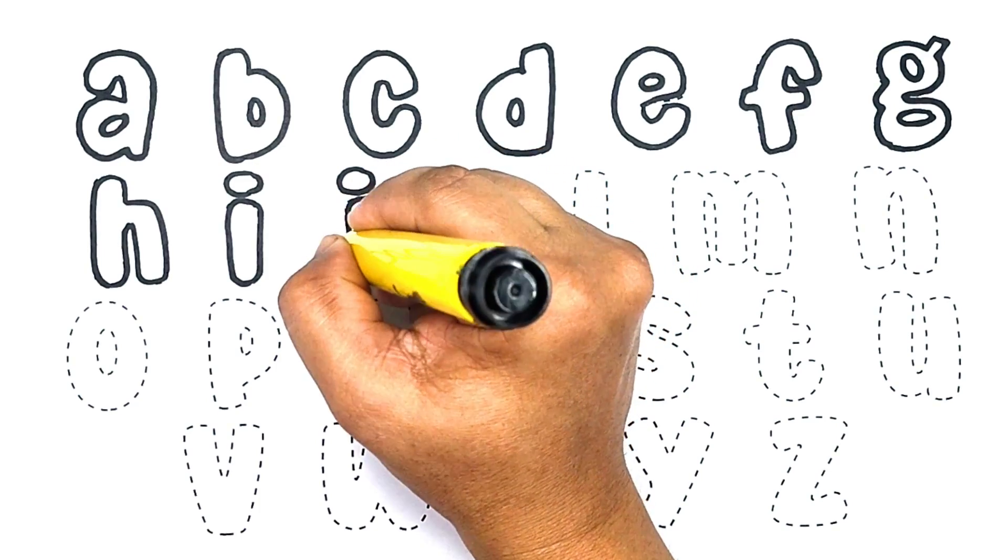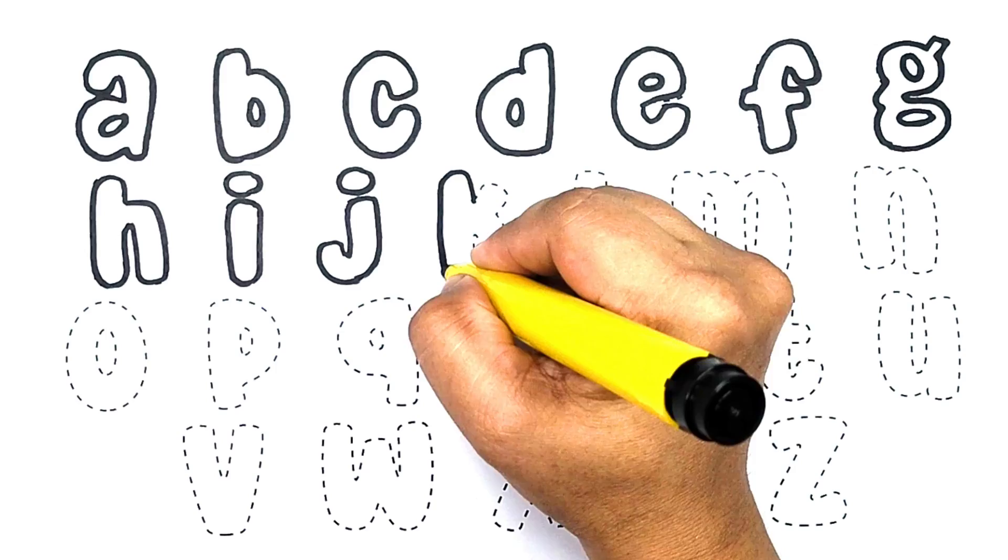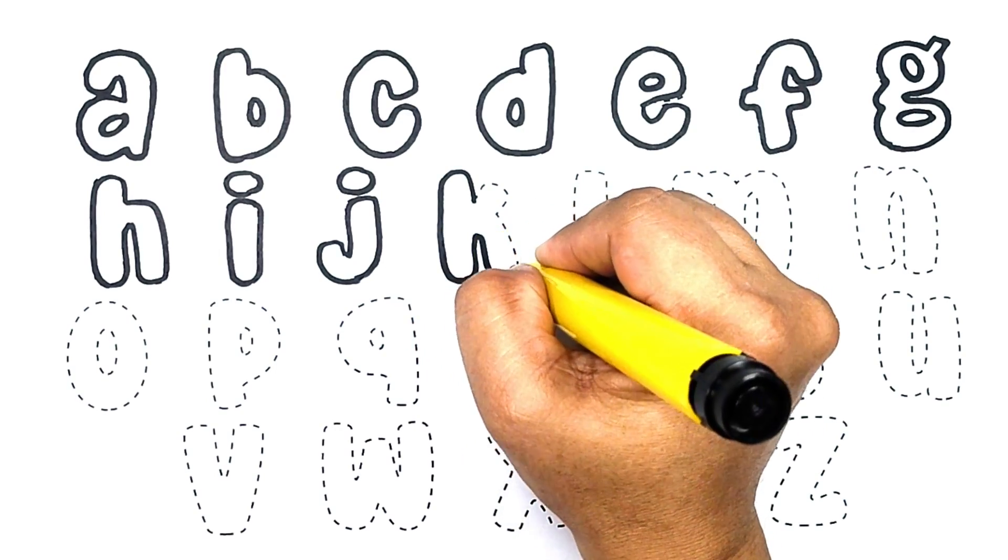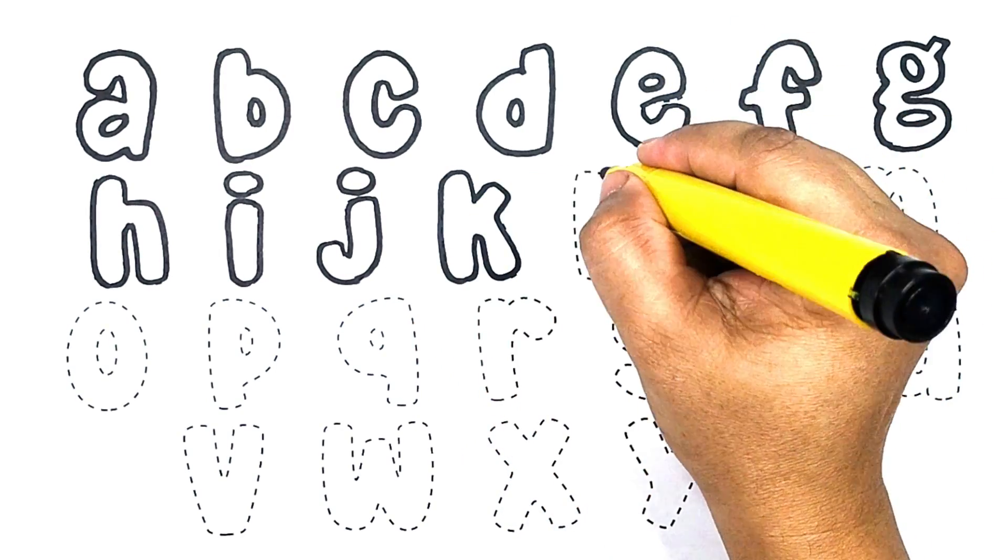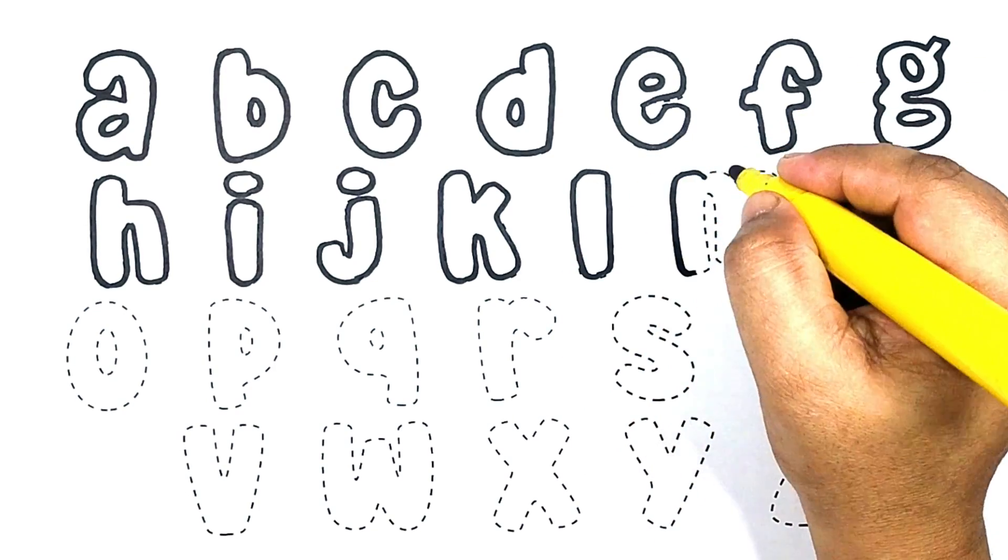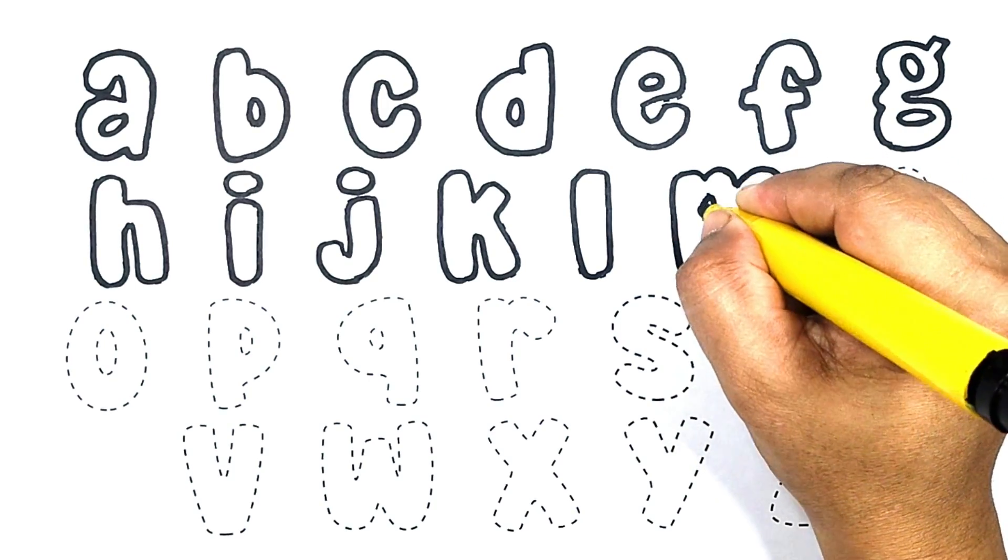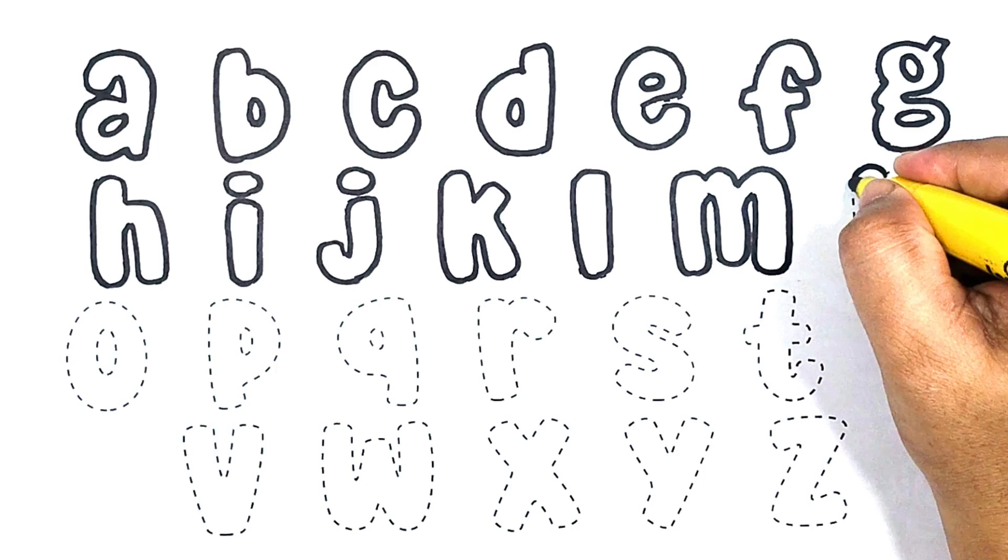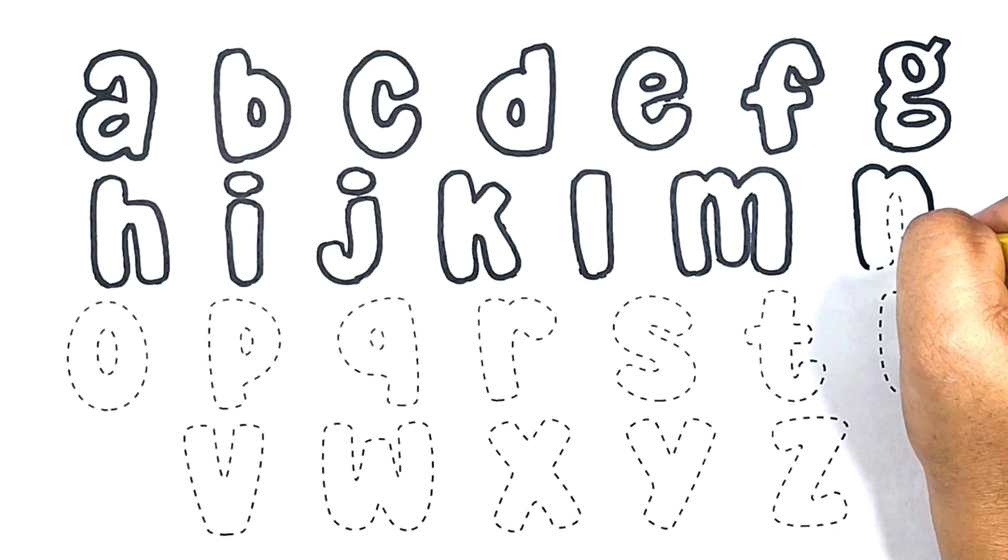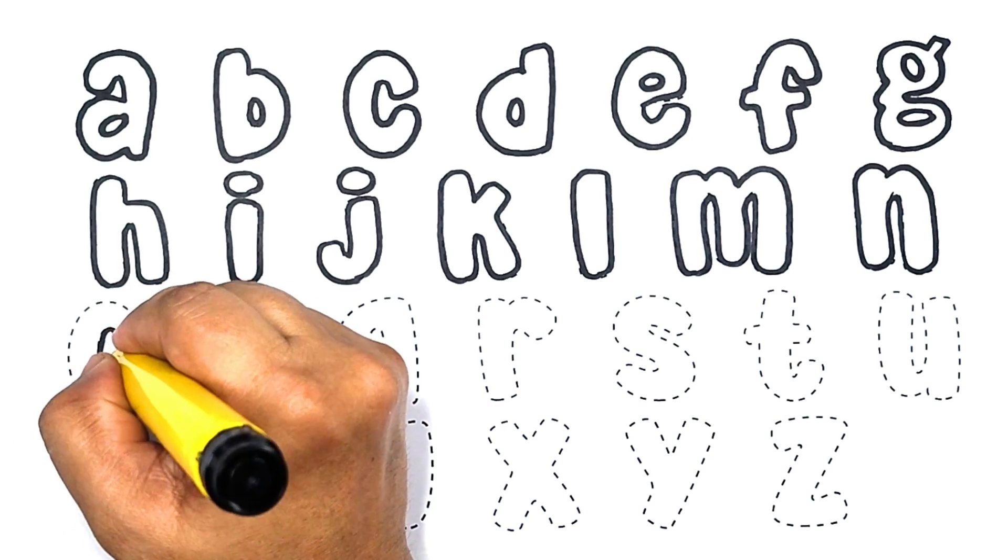A, B, C, D, E, F, G, H, I, J, K, L, M, N, O, P, Q, R, S, T, U, V, W, X, Y, and Z. Now I know my ABCs, next time won't you sing with me?